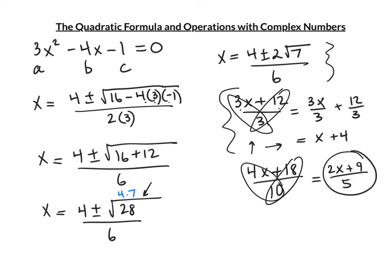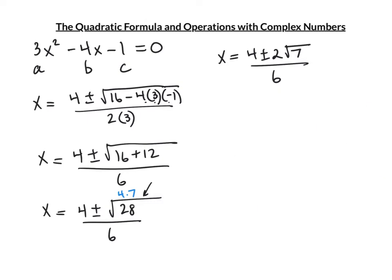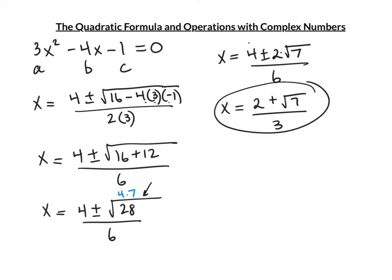Looking at (4 ± 2√7)/6: there are two terms above — 4 and 2√7 — and 6 below, all divisible by 2. Dividing everything by 2: 4/2 = 2, 2√7/2 = √7, 6/2 = 3. The simplified answer is (2 ± √7)/3.